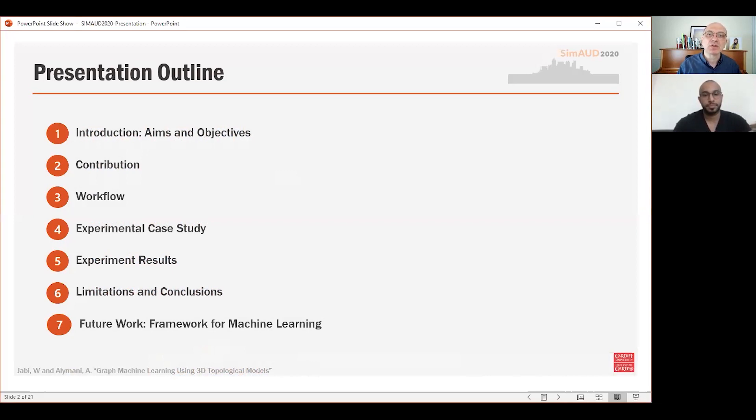First, we will start with an introduction to the topic of graph machine learning and explain our aims and objectives. We will then explain the research contribution of our work. After that, we will explain the general framework and the proposed workflow. Then we will discuss the experiment we set up and its results.